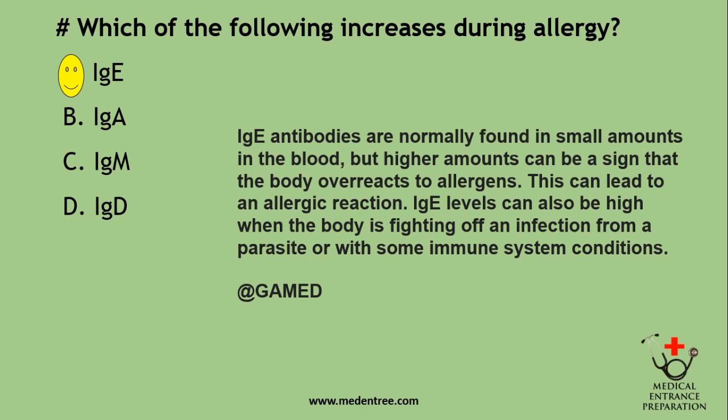The five immunoglobulins can be memorized with the mnemonic GAMED. IgG is the one which crosses the placenta. IgA is the one which is found in saliva.